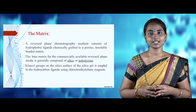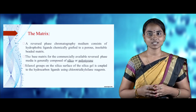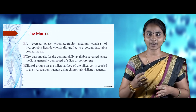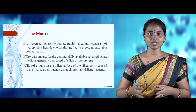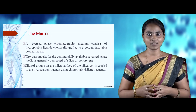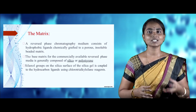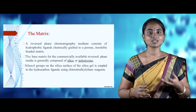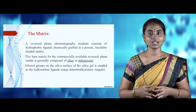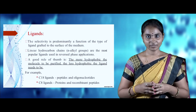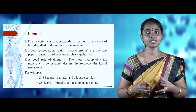Reverse phase chromatography contains common components. The first component is the matrix: a reverse phase chromatography medium consists of hydrophobic ligands chemically grafted to a porous insoluble beaded matrix. The base matrix for commercially available reverse phase chromatography is generally composed of silica or sometimes polystyrene. Silanol groups on the silica surface couple to hydrocarbon ligands using the chlorotrialkylsilane reagent.